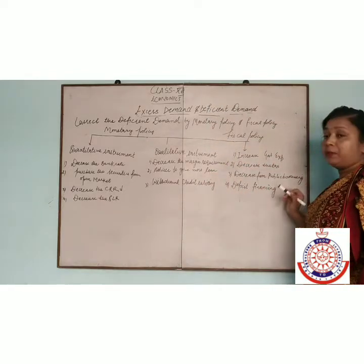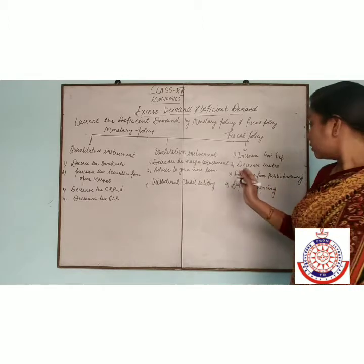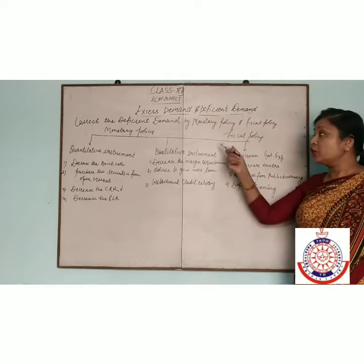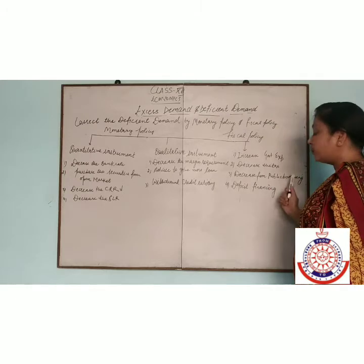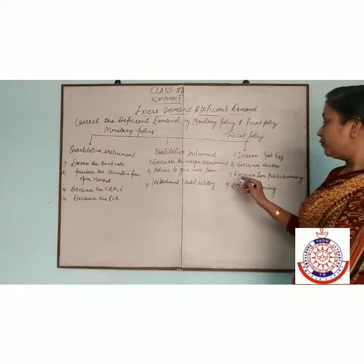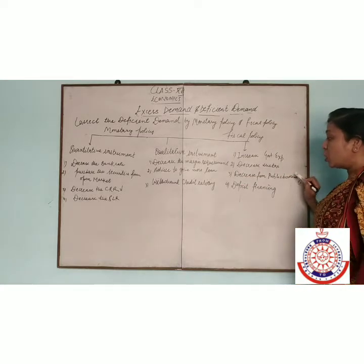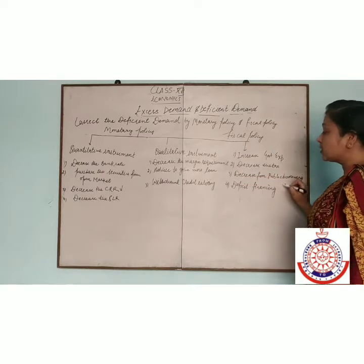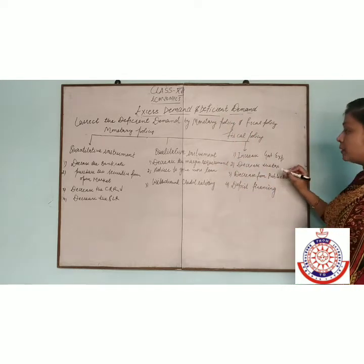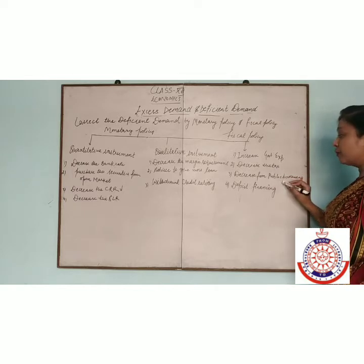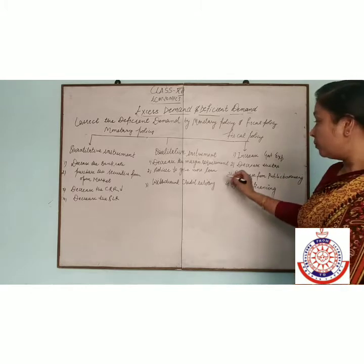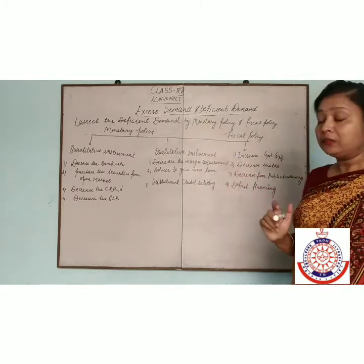Decrease in public borrowing: in case of deficit demand, the government takes less borrowing from the public. If less borrowing is taken from the public, all the money remains with the public to buy goods and services. So decreasing public borrowing will also solve our deficit demand problem.